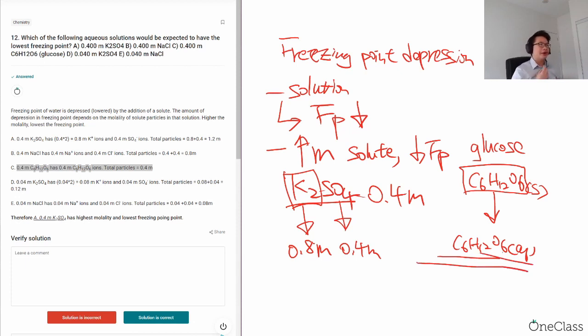Therefore, when we have 0.4 molality of glucose and dissolve it, the total amount of particles or molecules still equals 0.4 molality because it doesn't do any dissociation.